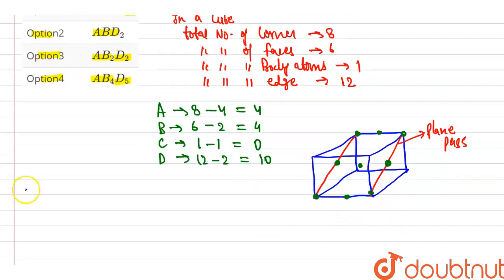Now we discuss the formula. We know the contribution at corner is 1/8 into total atom present at corner is 4, so multiplied by 4. Plus, we know the contribution at face is 1/2, and total atoms present at face, that is 4, so multiplied by 4.